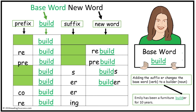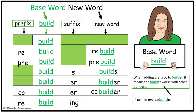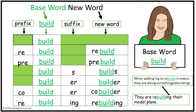In this example, adding the suffix er to the base word build makes the new word builder, making it a noun. The prefix co means with others. When prefix co is added to build with suffix er, it means a builder who works with other builders and is a noun. The last new word is rebuilding, meaning building again.